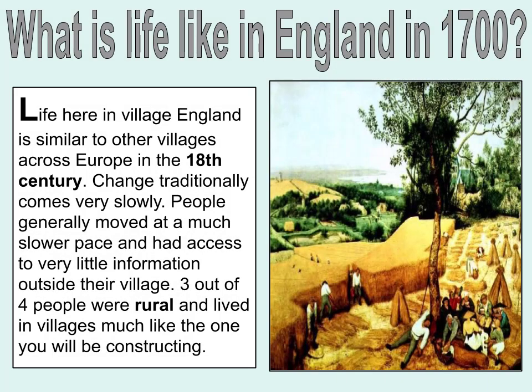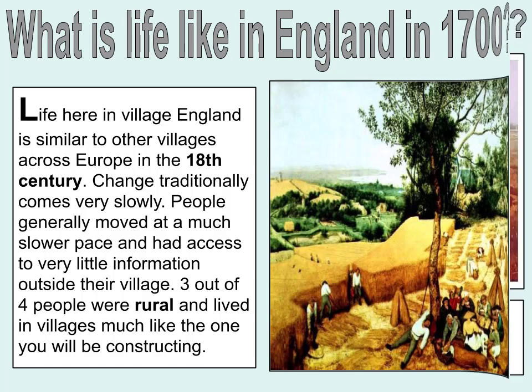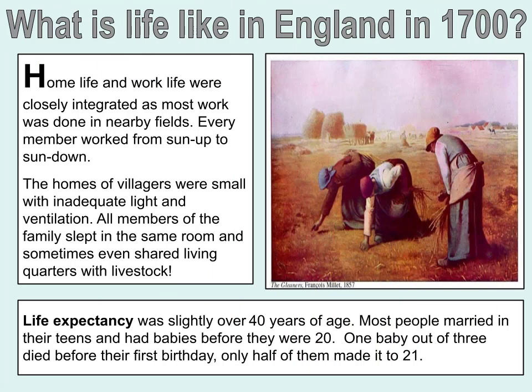Life here in village England is similar to other villages across Europe in the 18th century. Change traditionally comes very slowly. People generally moved at a much slower pace and had access to very little information outside their village. Three out of four people were rural and lived in villages much like the one you will be constructing. Home life and work life were closely integrated, as most work was done in nearby fields. Every member worked from sunup to sundown. The homes of villagers were small with inadequate light and ventilation. All members of the family slept in the same room. Life expectancy was slightly over 40 years of age. Most people married in their teens and had babies before they were 20. One baby out of three died before their first birthday, and only half made it to 21.